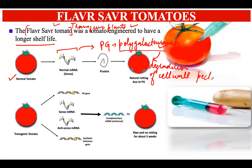There is a specific component called pectin in the cell wall of the tomato, and this polygalacturonase enzyme leads to the degradation of that pectin. As a result, the tomato starts to rot, the cell wall develops wrinkles, the shelf life decreases, and the tomato becomes susceptible to several fungal infections, so ripening happens early and the tomatoes are no longer good for consumption.